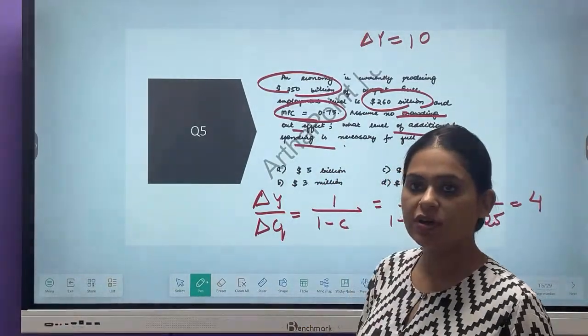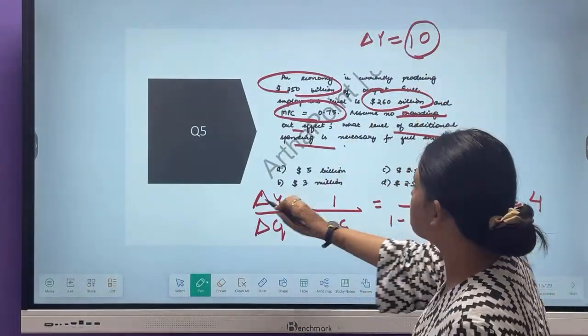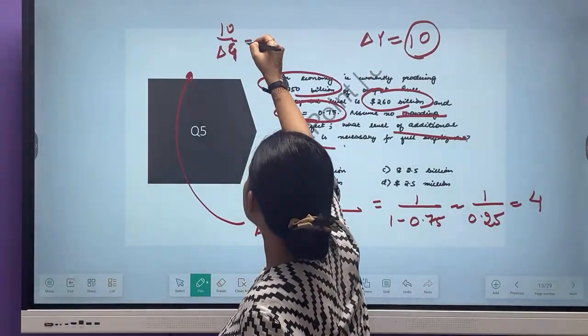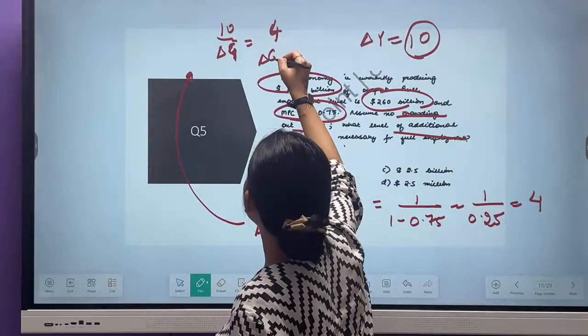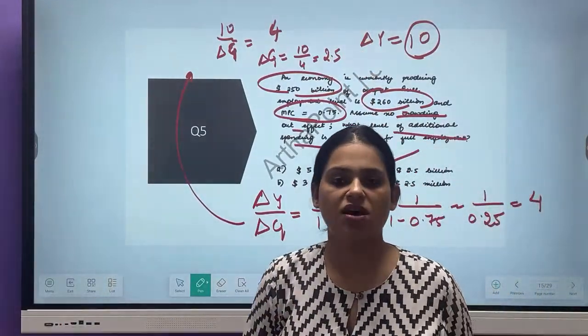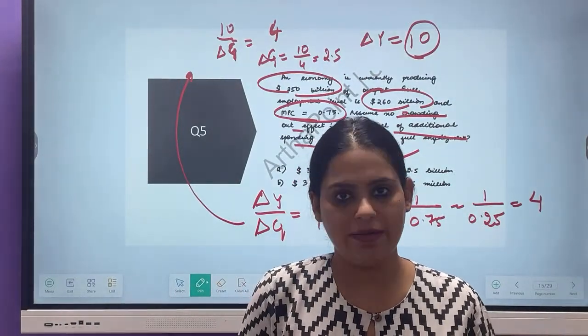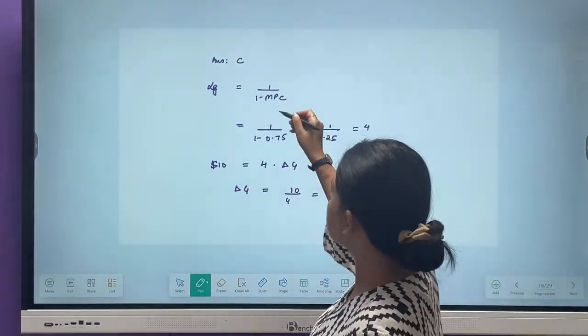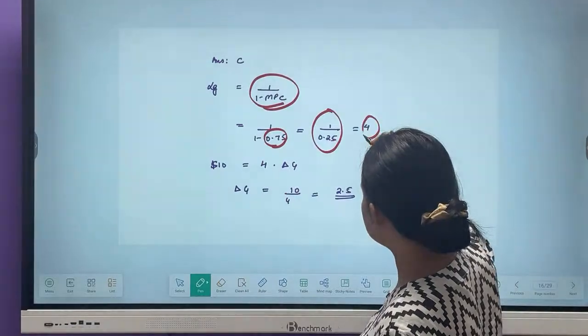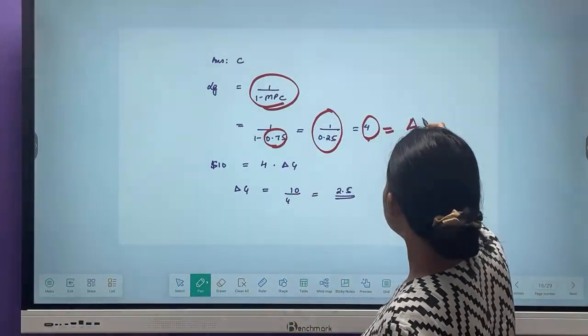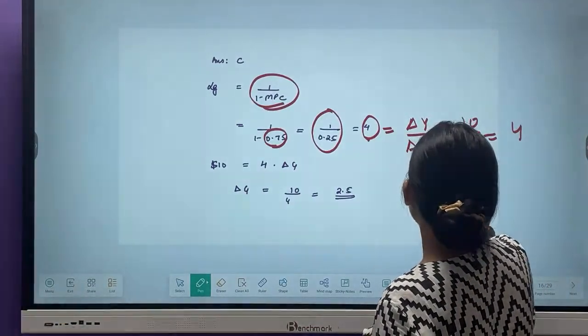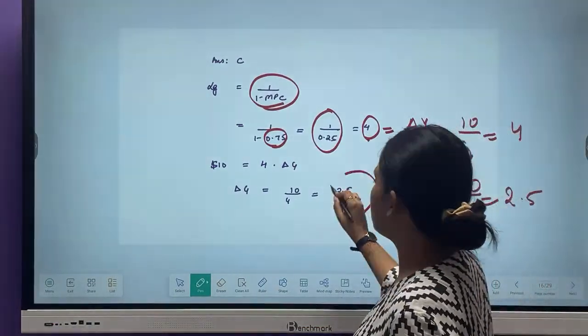What is change in Y given as? 10. So instead of change in Y, I will put 10. So I will get 10 upon change in G is equal to 4. So change in G will be 10 by 4, which is 2.5. So answer will be 2.5. That's the answer to this question. Very simple, I am just using the formula of multiplier. Multiplier is 1 upon 1 minus MPC. MPC is given as 0.75, so 1 upon 0.25, this is 4. Now 4 is nothing but change in Y by change in G. Change in Y is 10, so change in G is 10 by 4, which is 2.5. Answer will be 2.5.